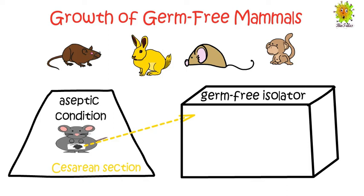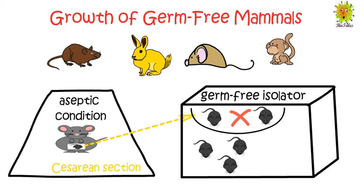After establishing a germ-free animal, the germ-free colony can be maintained by normal mating between two germ-free parents. Since the parents are germ-free, the offspring will also remain germ-free during birth. So far we have learned what notobiotic means, what axenic means, and how to establish germ-free birds and germ-free mammals.